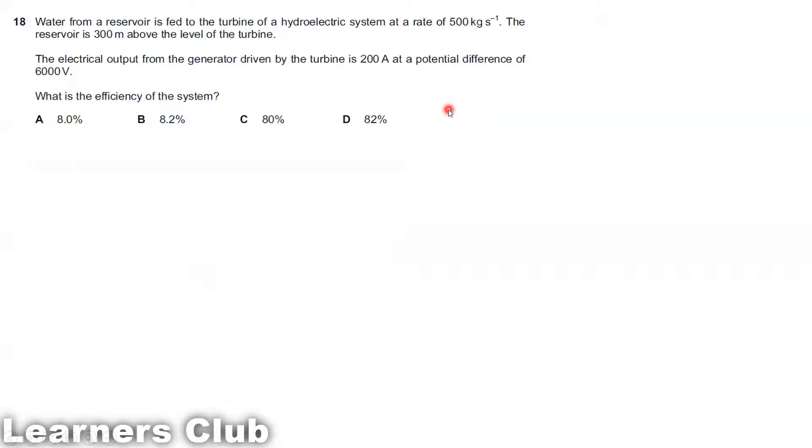Question 18. Water from a reservoir is fed to the turbine of a hydroelectric system at a rate of 500 kg per second. This means per second, 500 kg of water is flowing. The reservoir is 300 meters above the level of the turbine. The electric output from the generator driven by the turbine is 200 amperes at a potential difference of 6000 volts. What is the efficiency of the system?